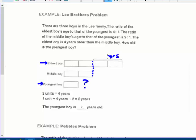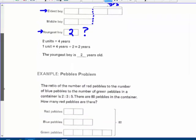Well, if two of those units, two bars, represent four, one of them would represent two, and that is the youngest boy, so he's two. He's two years old. Pretty easy.